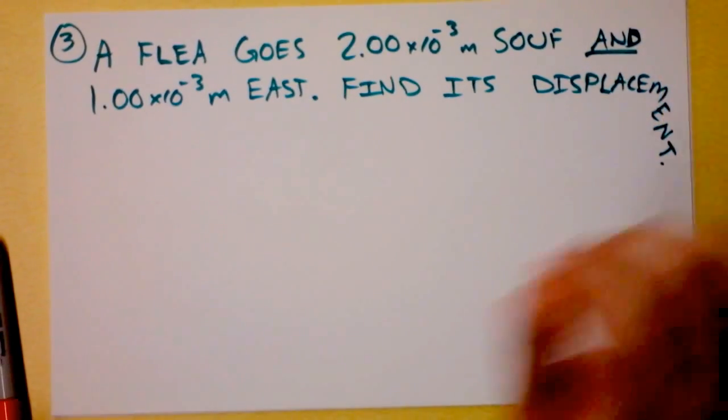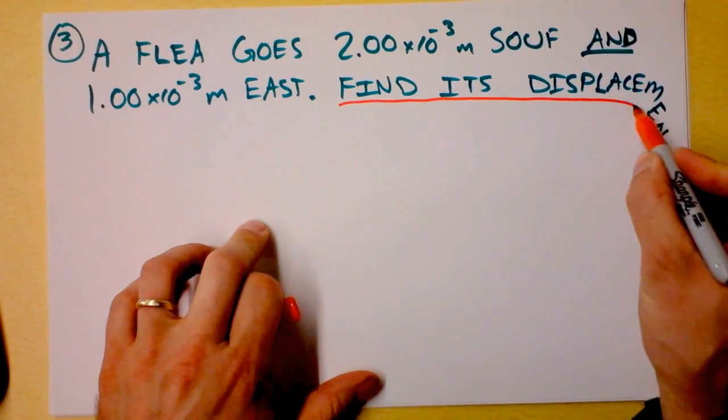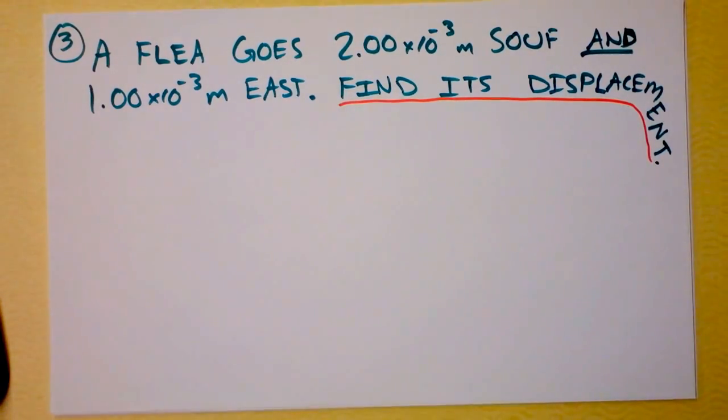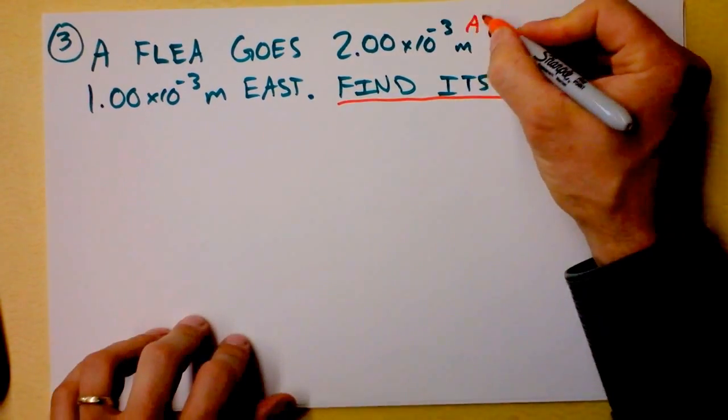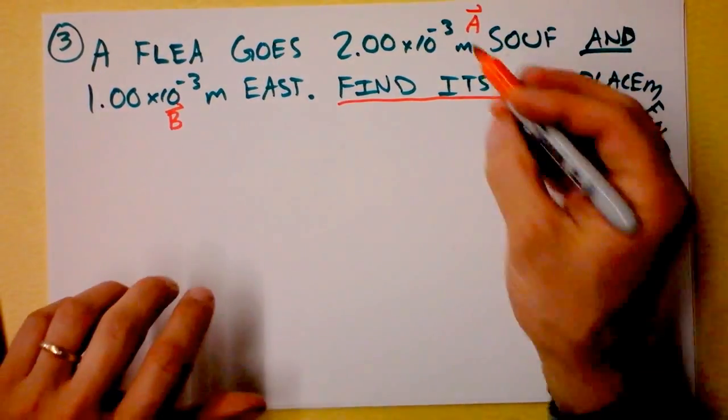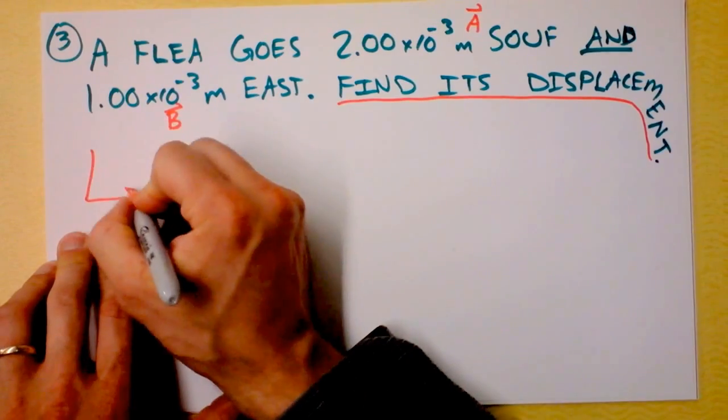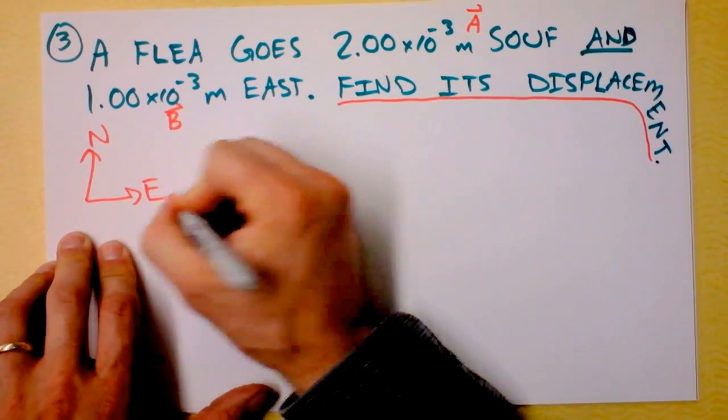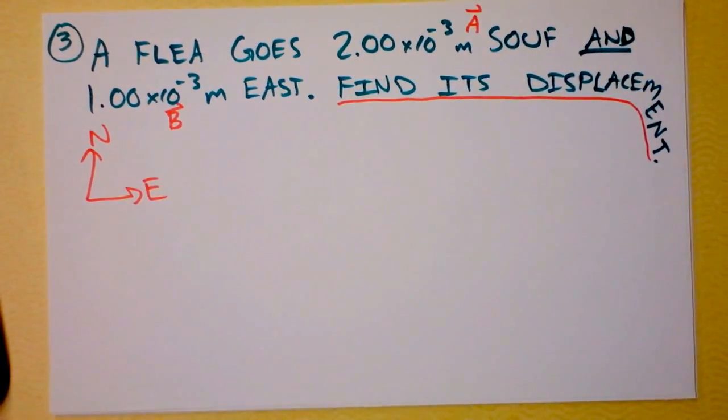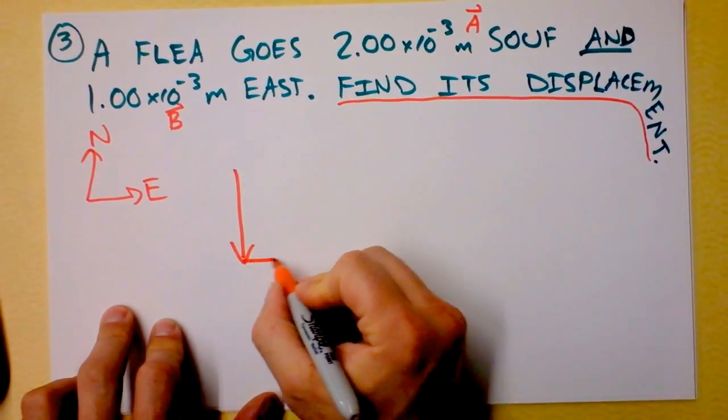Here's the third problem. A flea goes a little bit to the south and a little bit to the east, and you actually are given a problem here. You have to find the displacement of the flea, which is sort of what we have been doing. We've been adding these vectors. So I'm going to define this guy as A, and I'm going to define that guy as B, and I'm going to draw them. Well, this one's supposed to be twice as long as that one, but I need to establish a coordinate system. Here's my coordinate system. It says north and east, and I'm trying to find some vectors.